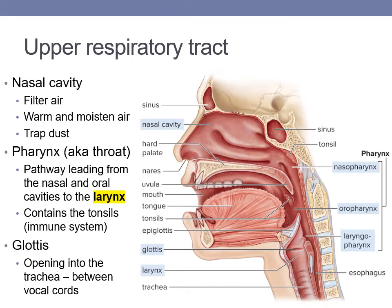Air enters the nasal cavity, but air can also enter through the oral cavity. The hair inside the nasal cavity serves to filter the air as it enters the body. The nasal cavity is also lined with a mucus membrane that secretes mucus to trap debris and moisten the air. The nasal cavity also functions to warm the air so it's not too cold when it reaches our lungs.